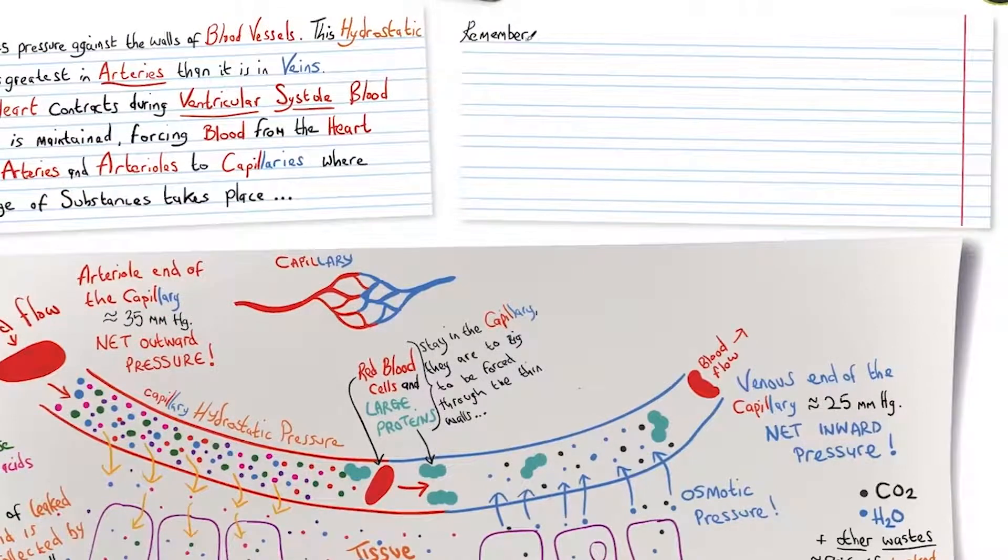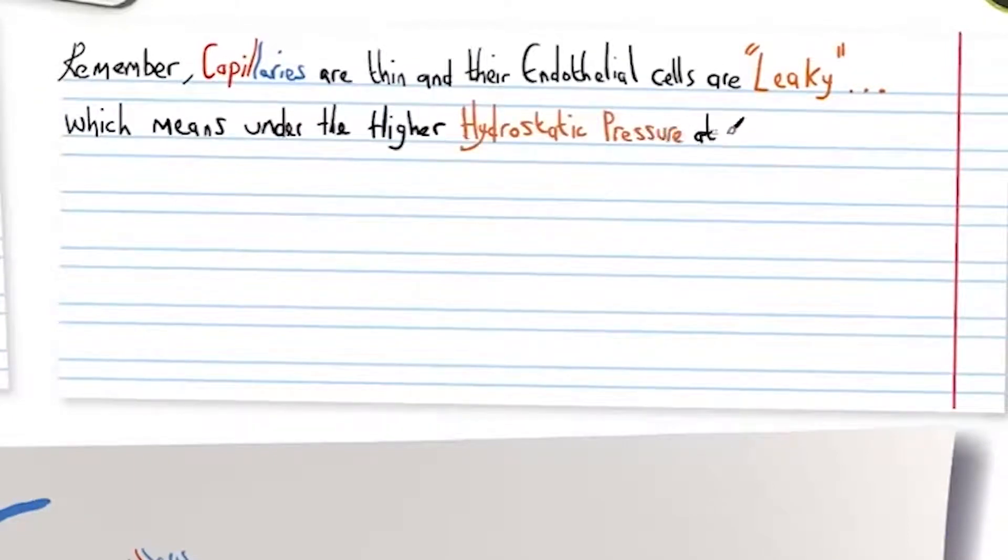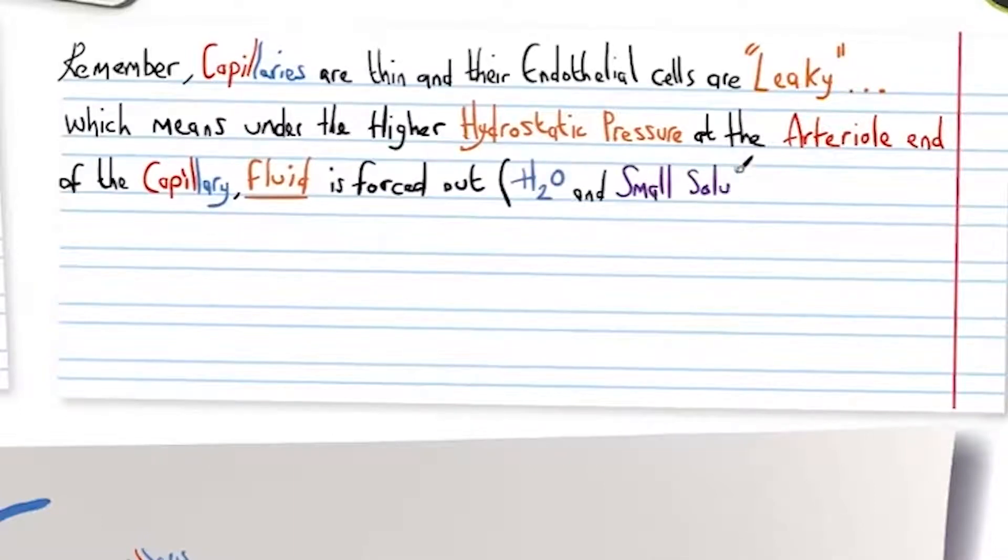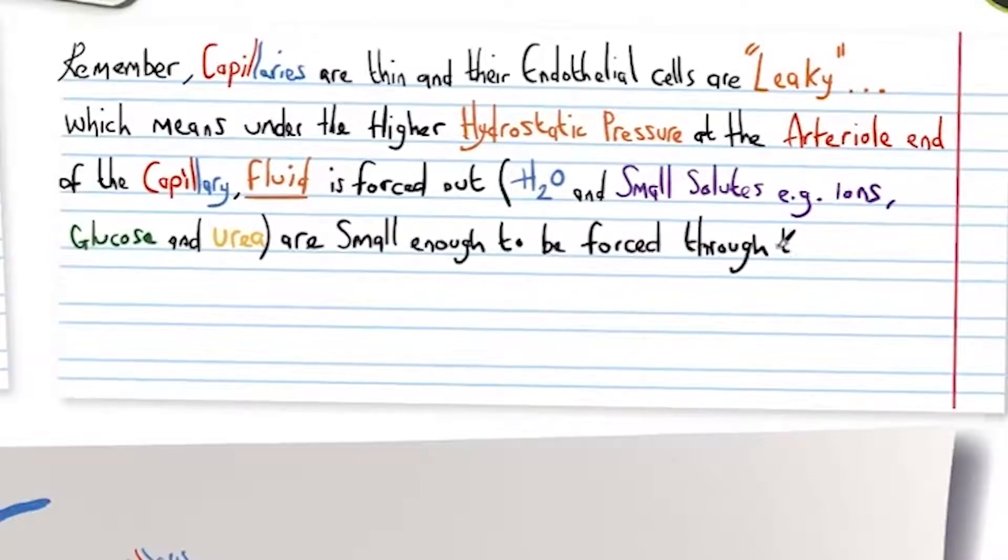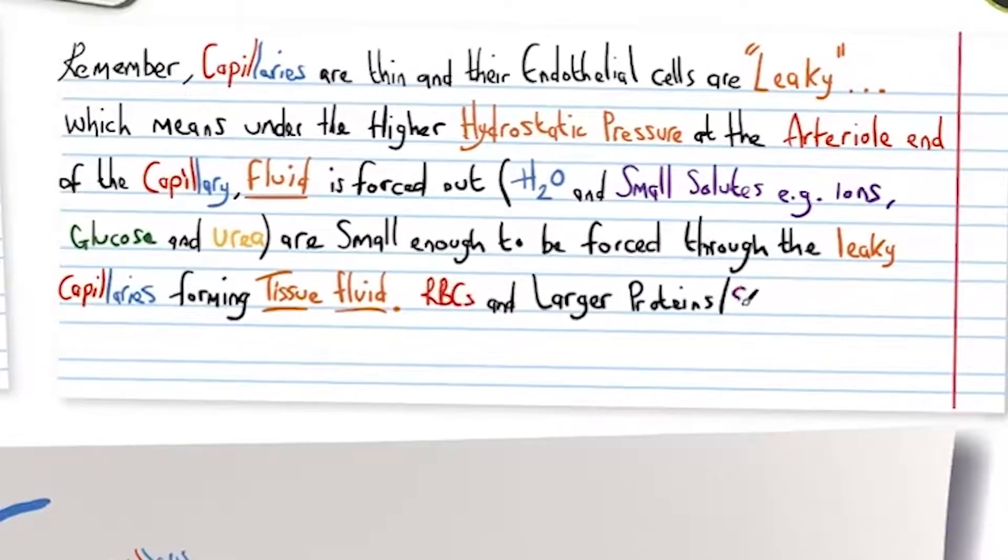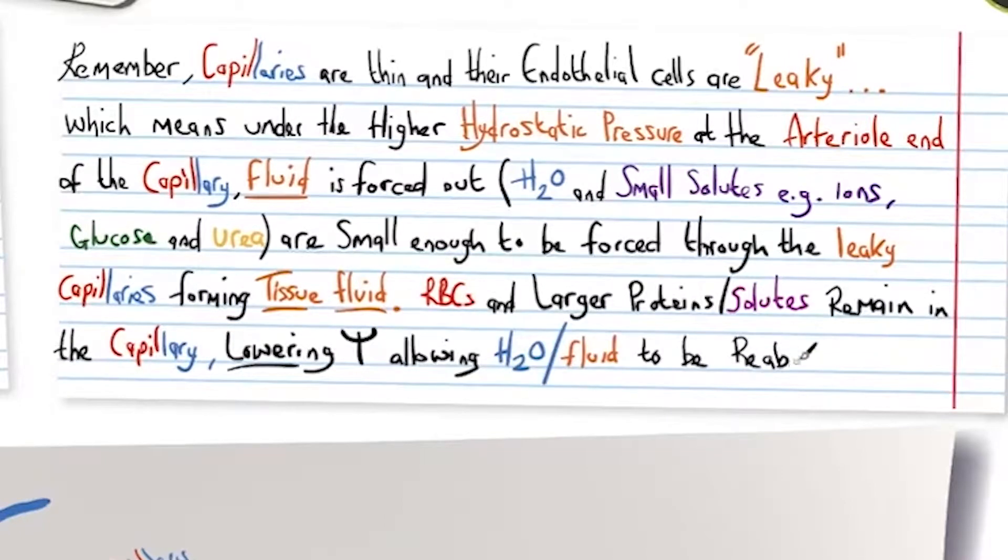So remember capillaries are thin and the endothelial cells are leaky which means under the higher hydrostatic pressure of the arterial end of the capillary fluid is forced out. Water, small solutes such as ions and glucose and urea are small enough to be forced through the leaky capillaries forming this tissue fluid. Red blood cells and larger proteins and larger solutes remain in the capillary lowering the water potential allowing water and fluid to be reabsorbed.